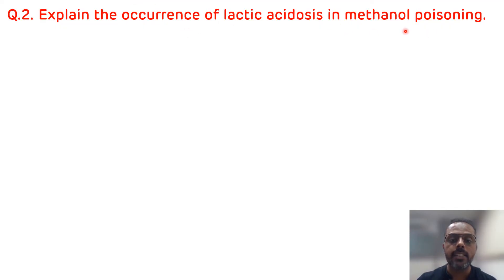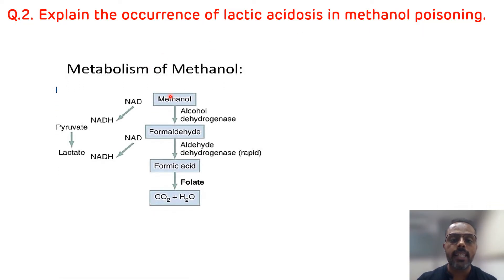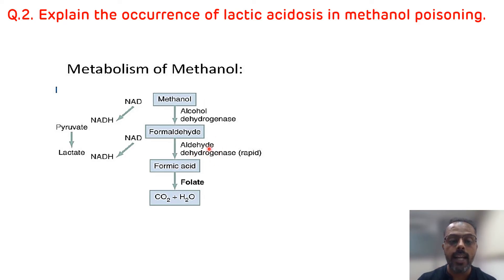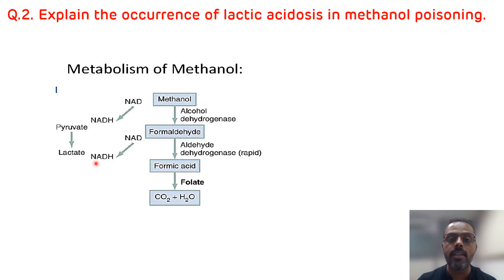The second and last question: explain the occurrence of lactic acidosis in methanol poisoning. When methanol metabolism occurs, methanol is converted to formaldehyde via alcohol dehydrogenase enzyme, which requires NAD as a coenzyme — this NAD gets converted to NADH. Formaldehyde is then converted to formic acid via aldehyde dehydrogenase enzyme, which also requires NAD, again producing NADH. This results in a high NADH level in the cell, which favors the conversion of pyruvate to lactate, causing accumulation of lactic acid and resulting in lactic acidosis.